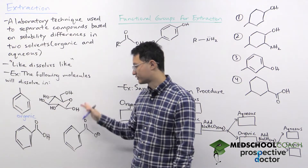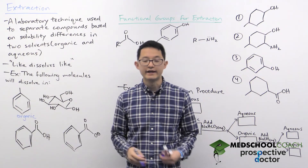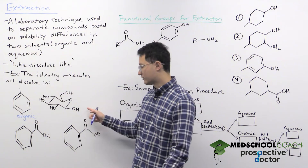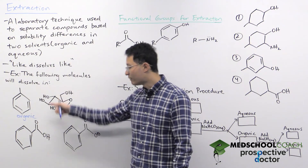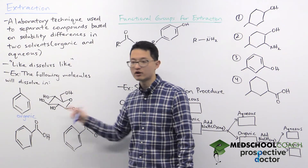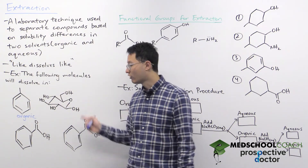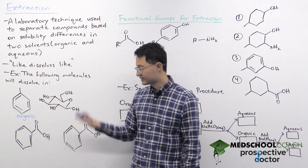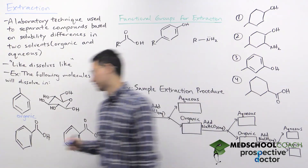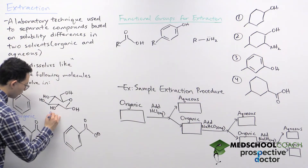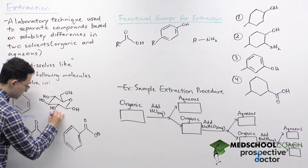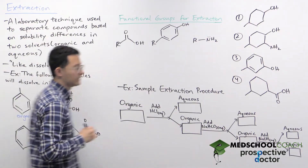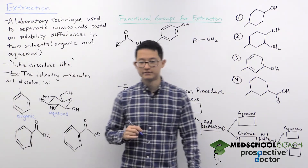The molecule on the top right is glucose. Glucose has a bunch of hydroxyl groups that are all very polar. So this is a polar molecule and it will dissolve in the polar aqueous solvent.